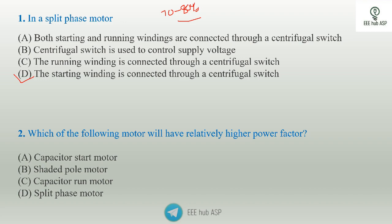Second question: which of the following motors will have a relatively higher power factor? The answer is Option C — the capacitor run motor has a higher power factor.